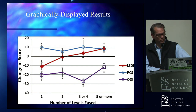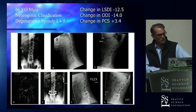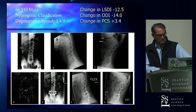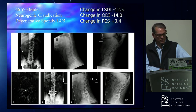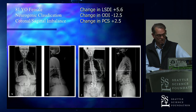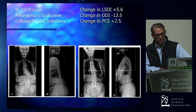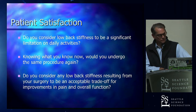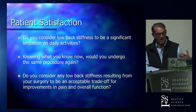Here's a male patient who had a one-level fusion for degenerative spondylolisthesis — his LSDI actually decreased, ODI down 13, PCS up 3.4 at two years. And a woman who was decompensated in the sagittal and coronal planes — we did a T4 to pelvis fusion on her, and LSDI rose modestly by five points but ODI was down 12.5 and PCS up 2.5.